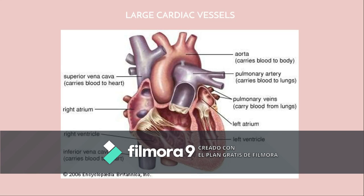Here we have an image of a heart. It shows the superior vena cava that carries blood to the heart, then the right atrium, the right ventricle, and the inferior vena cava. On the upper side we have the aorta, the most important artery in the body that carries blood to the body, then the pulmonary artery that carries deoxygenated blood to the lungs, and on the left side, the left atrium and the left ventricle.